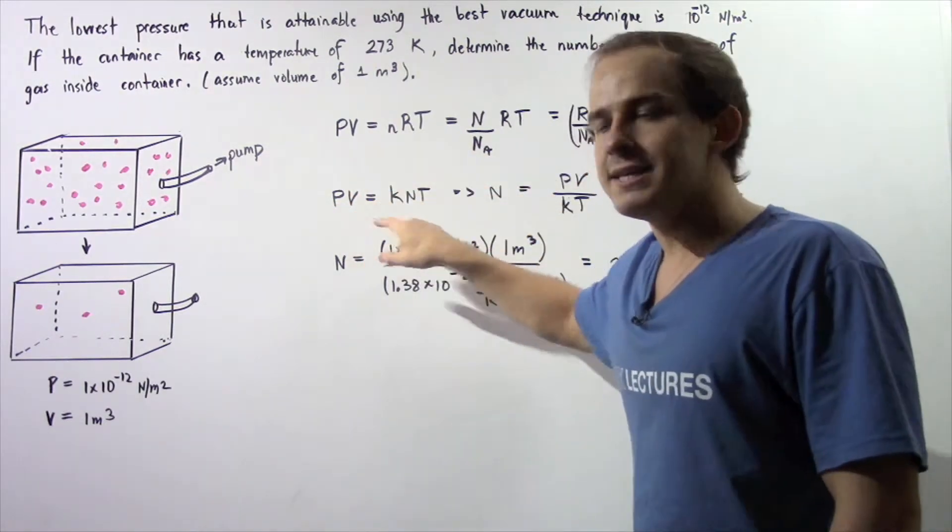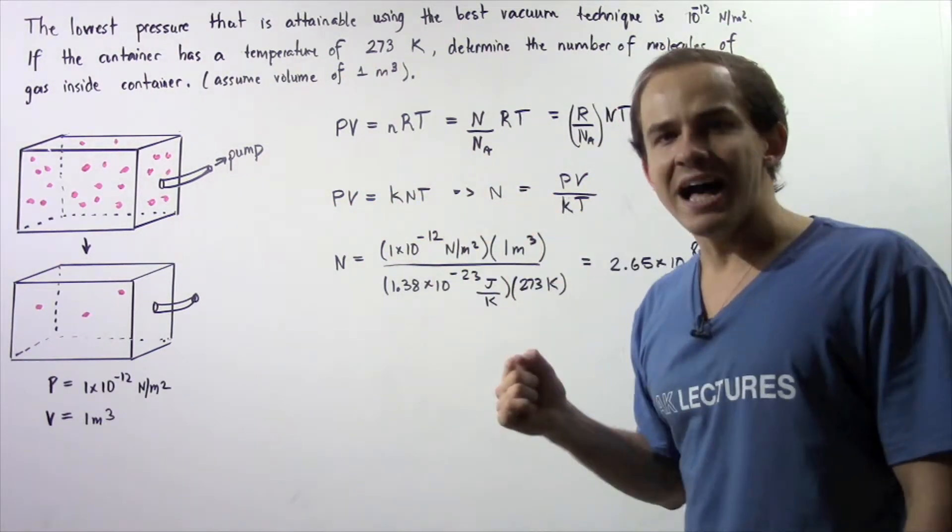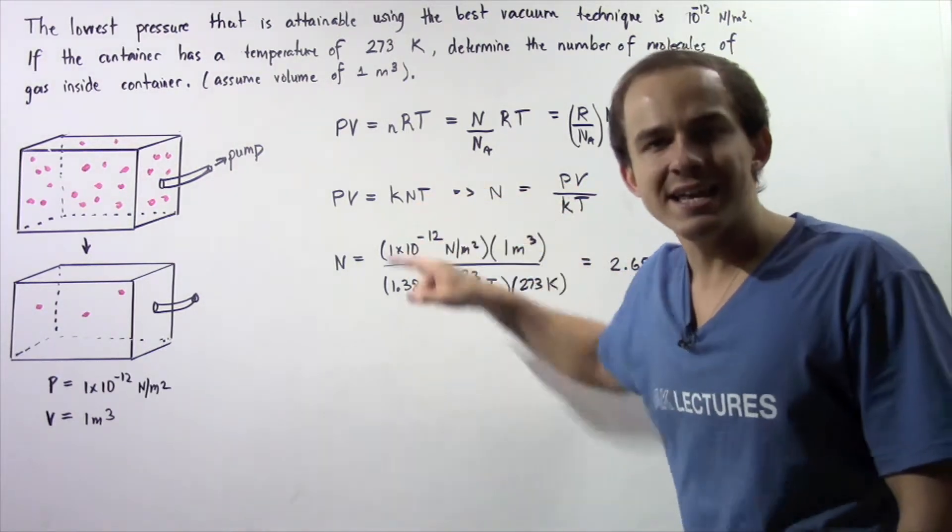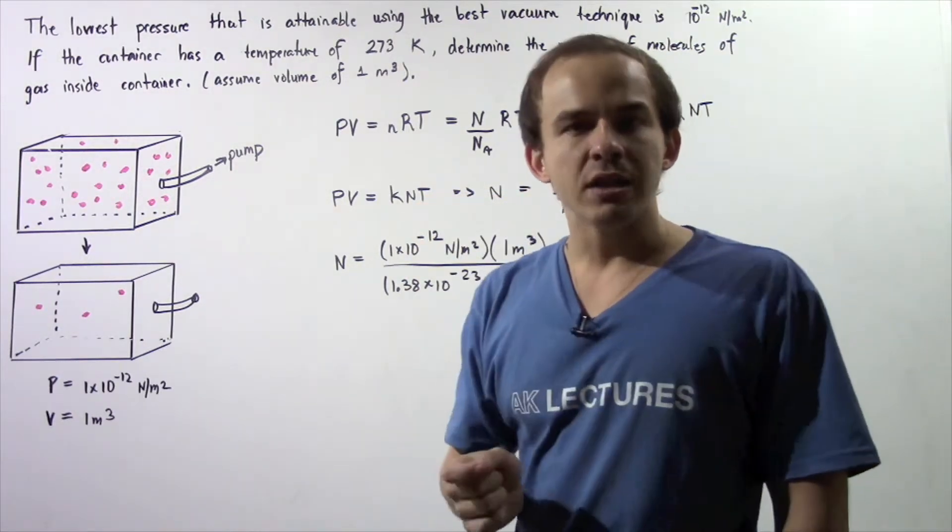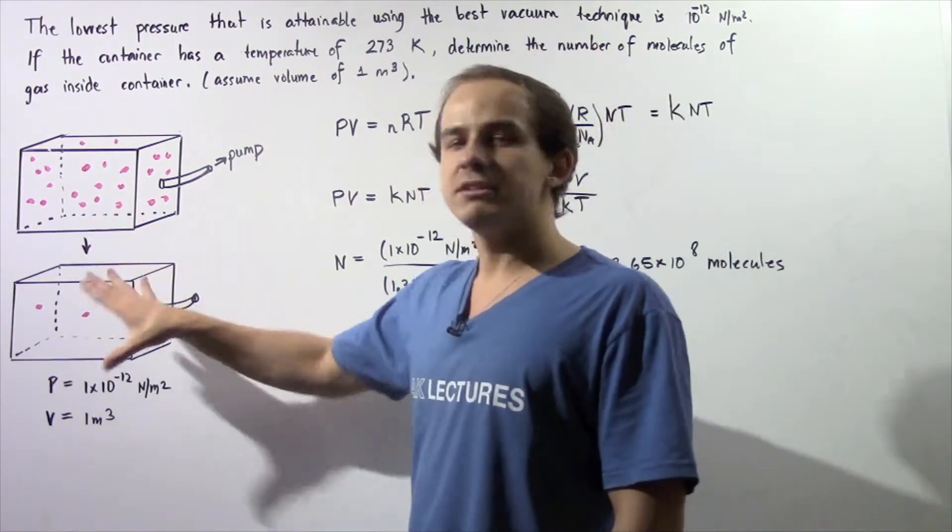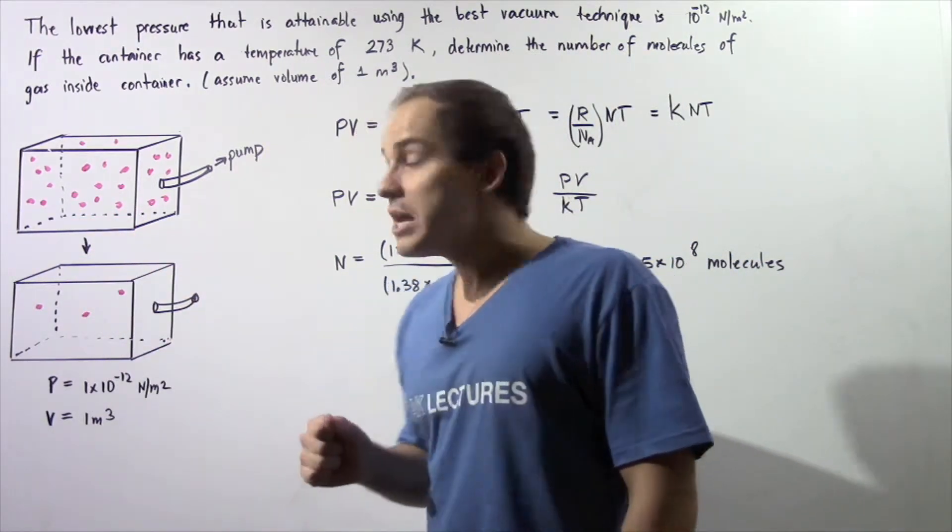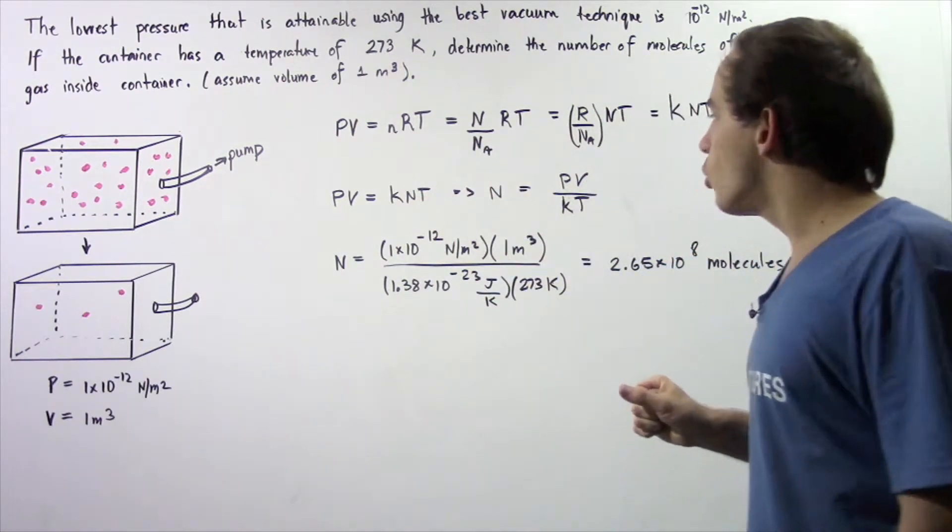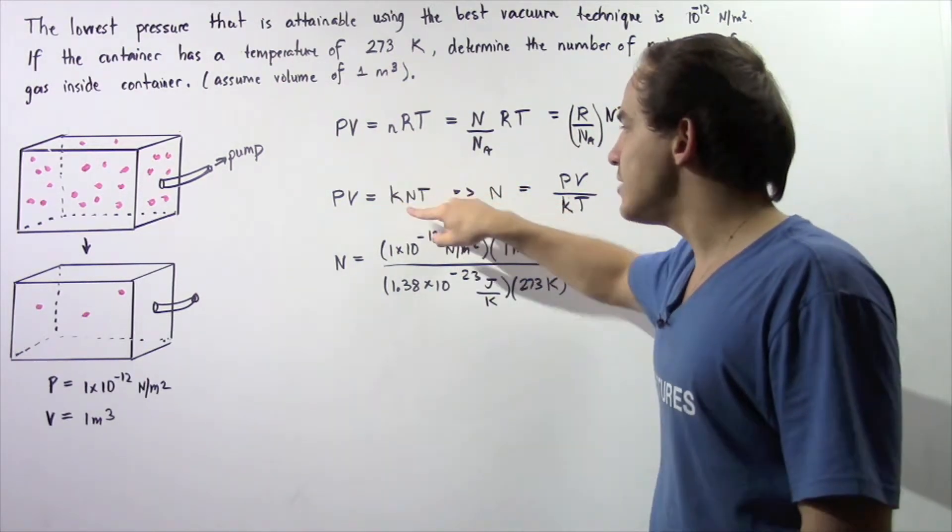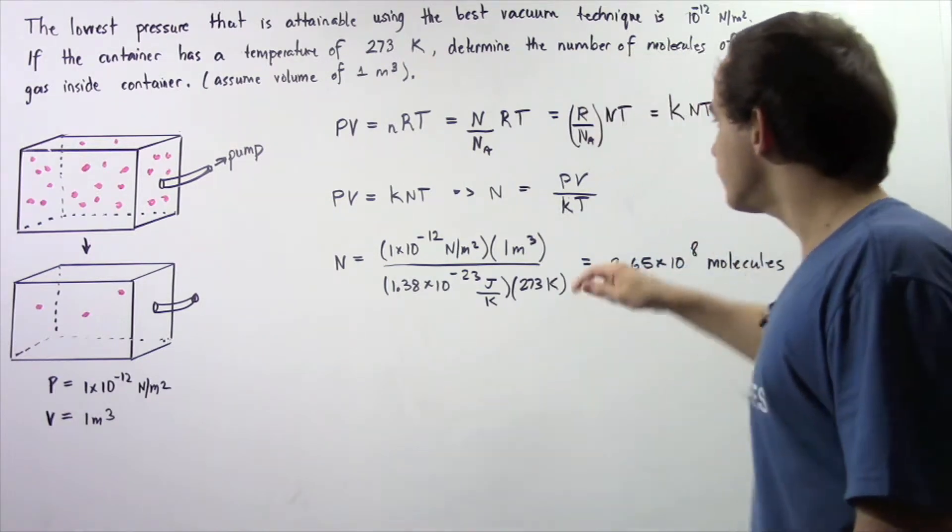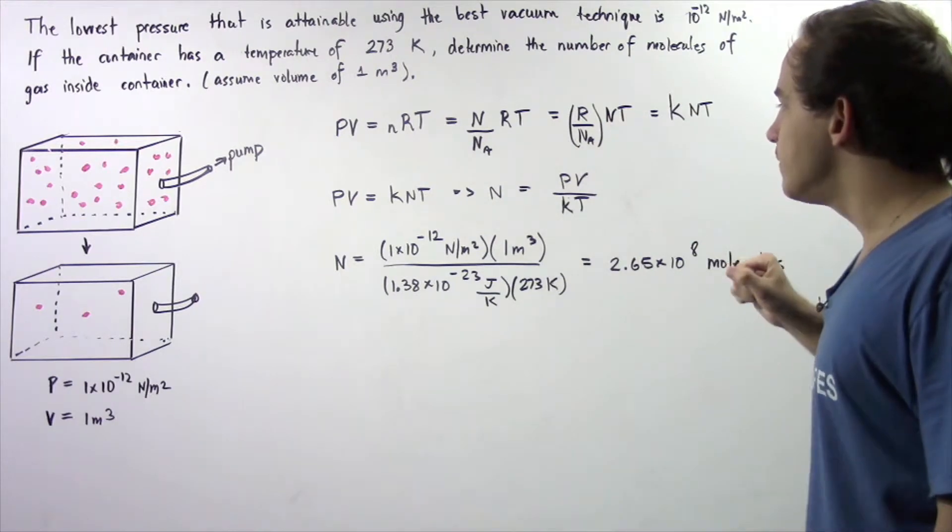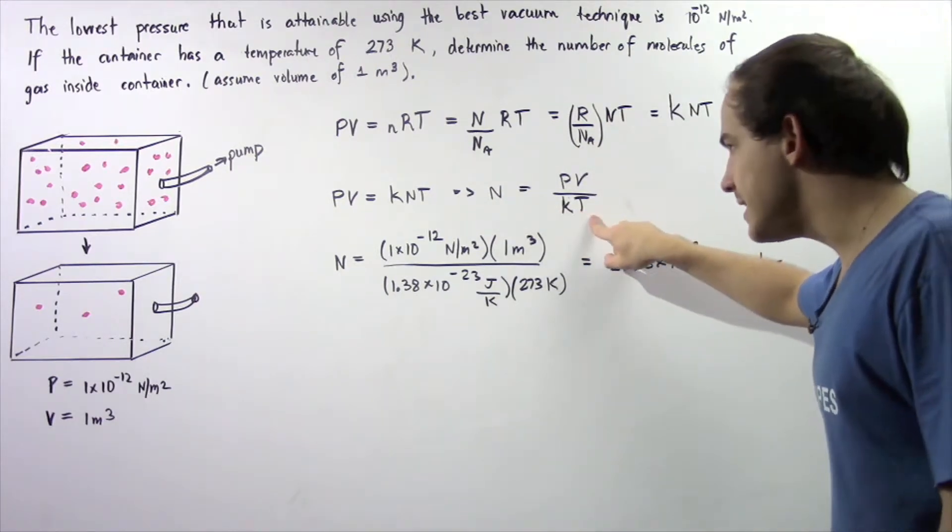So P times V is equal to k, the Boltzmann constant, multiplied by N multiplied by T, where N is the number of molecules of gas found inside our container. So this is the thing that we want to calculate. Let's rearrange this equation and solve for N. The number of molecules N is equal to the ratio PV divided by kT.